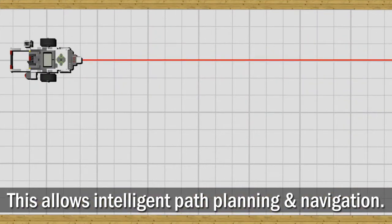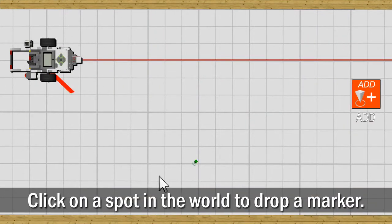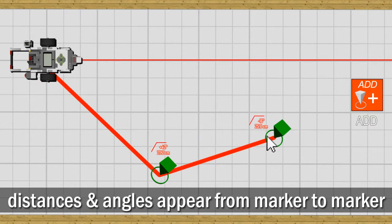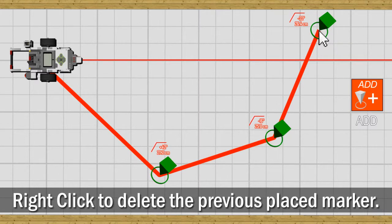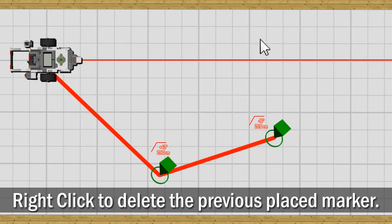Using the tool is straightforward. Simply click on a spot in the world, and a marker will appear along with its distance and angle from the robot, or the previous marker in the sequence. If you are unhappy with the location of any markers placed, you can always step back by right-clicking your mouse to delete the most recently created marker.